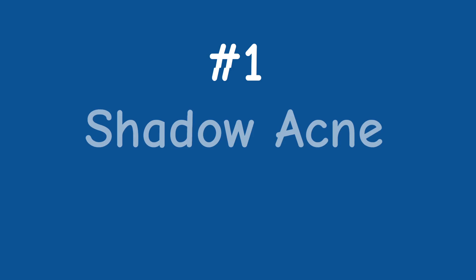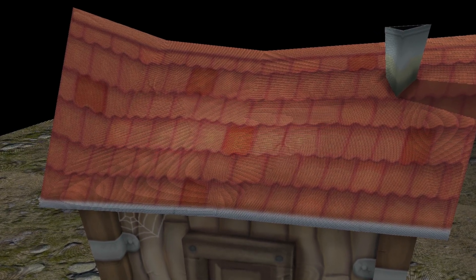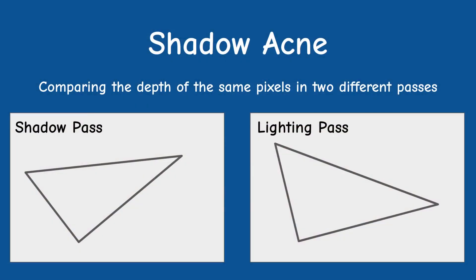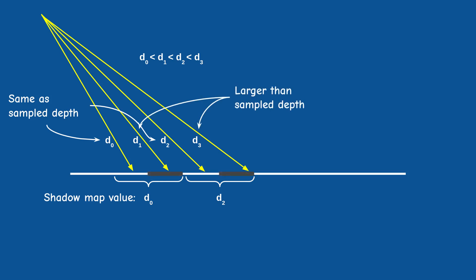The first problem is shadow acne, which is also known as erroneous self-shadowing. This is basically a shadow interleaved with non-shadowed pixels. The reason for this problem is that the interpolation of the triangle in the shadow pass is different from the interpolation in the lighting pass because these are usually two different viewpoints. This means that there can be minor numerical differences between the depth of the pixel in the two passes, which can cause some pixels to win the shadow test while neighboring pixels would fail.